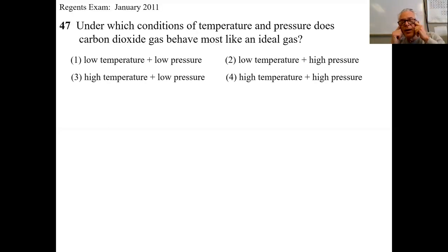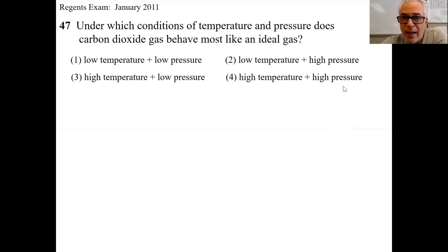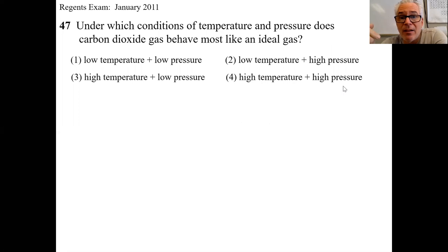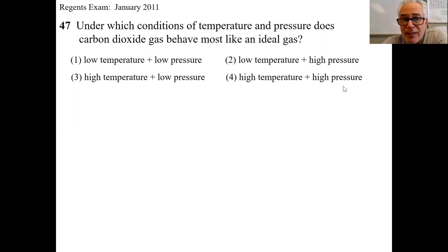This is your standard issue question from an old Regents. The Regents always asks a question like this — it's called the ideal gas question. They always ask about a real gas being more ideal. Sometimes they reverse and say which would be least ideal, but it's the same idea. The question says: under what conditions of temperature and pressure does this real gas, carbon dioxide, behave more like an ideal gas?